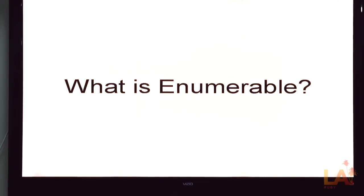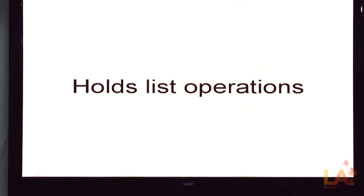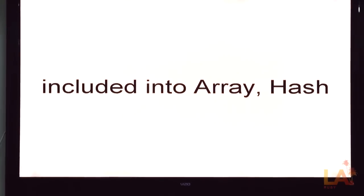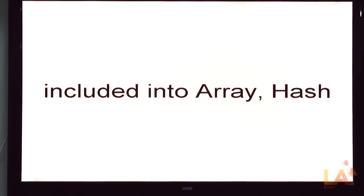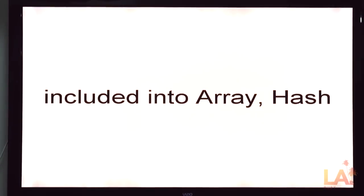Enumerable is a module. It's the thing that holds all of the list operations in Ruby - iterations and filtering and stuff like that. It's by default included already into arrays and hashes, so when you create those, you have everything I'm about to talk about as part of every one of those arrays or hashes.